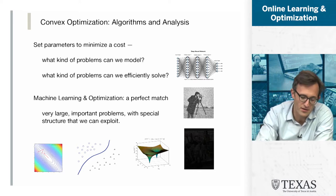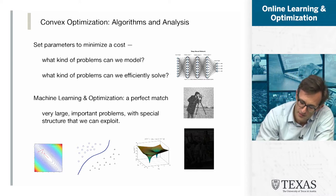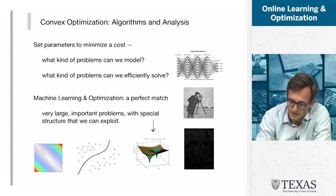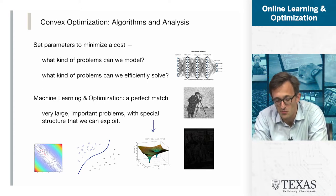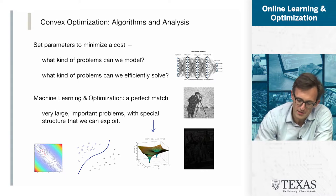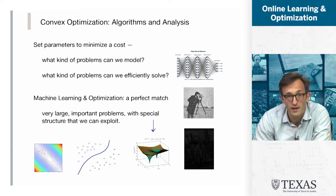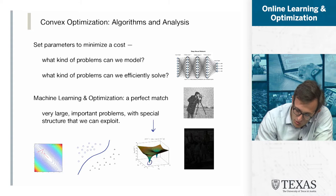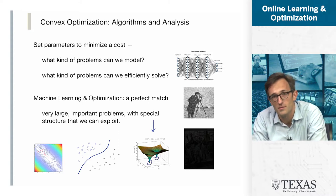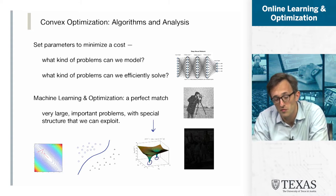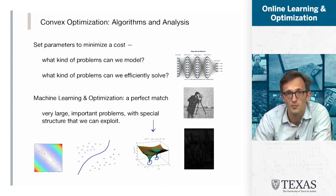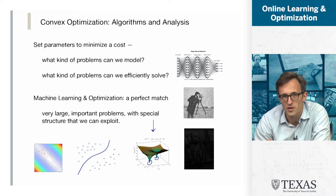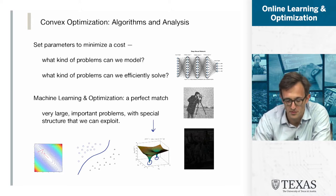If you look at this figure, what it depicts is two parameters — say x and y — and we're trying to find the setting for x and y in order to get as low as possible, to reach one of these two little points down here. That is the problem of minimizing this function — the abstract problem in optimization, illustrated with a simple two-variable example.